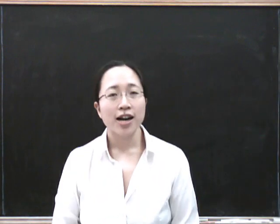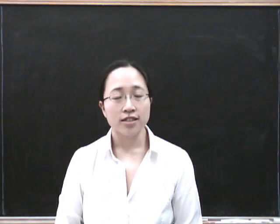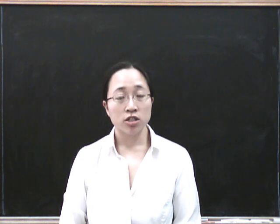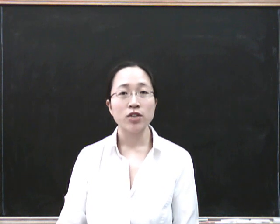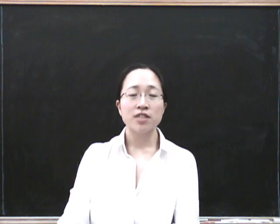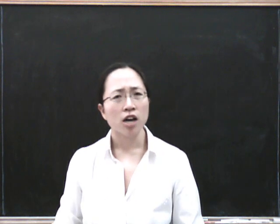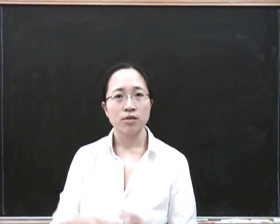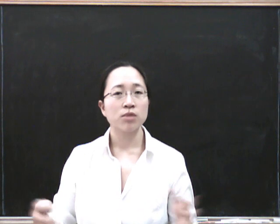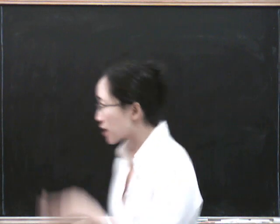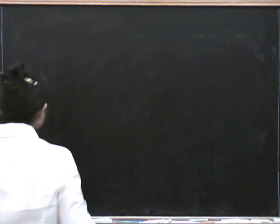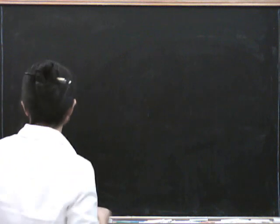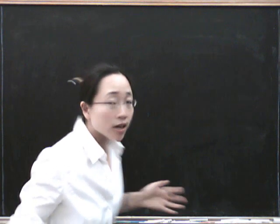Today we're going to talk about highest common factors and lowest common multiples. This is very relevant to modular arithmetic because of the things we've been doing where we've had to solve simultaneous equations but think very hard about what was the highest common factor between the numbers we were using for our modular arithmetic. So let's think about the relationship between the highest common factor and the lowest common multiple because it's kind of interesting.